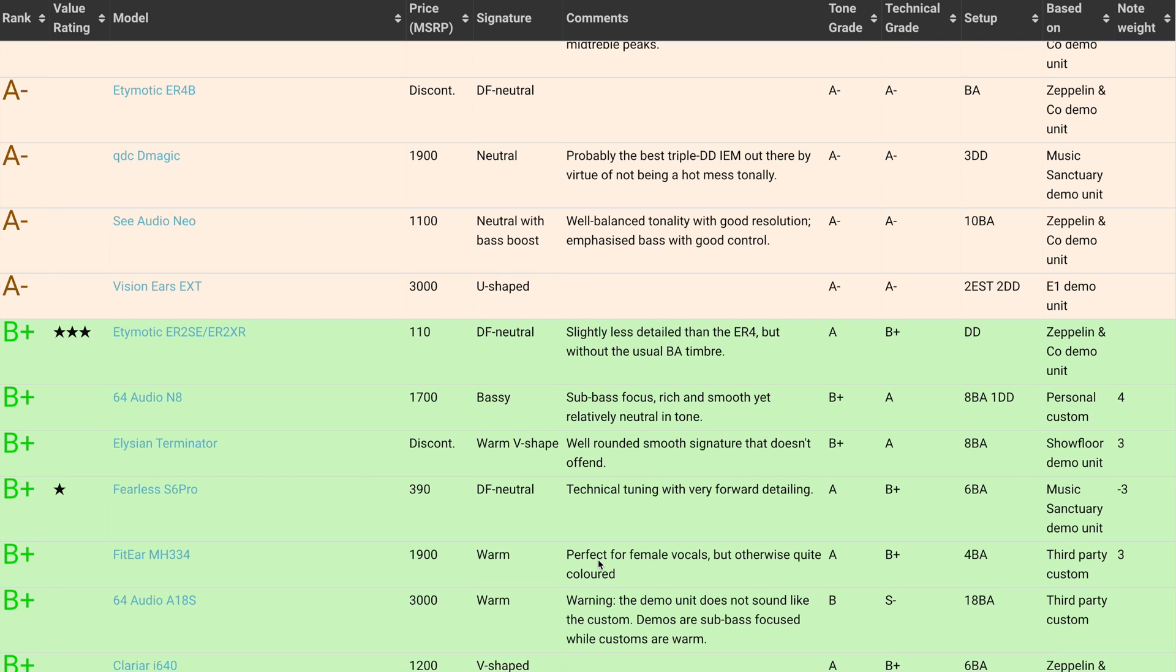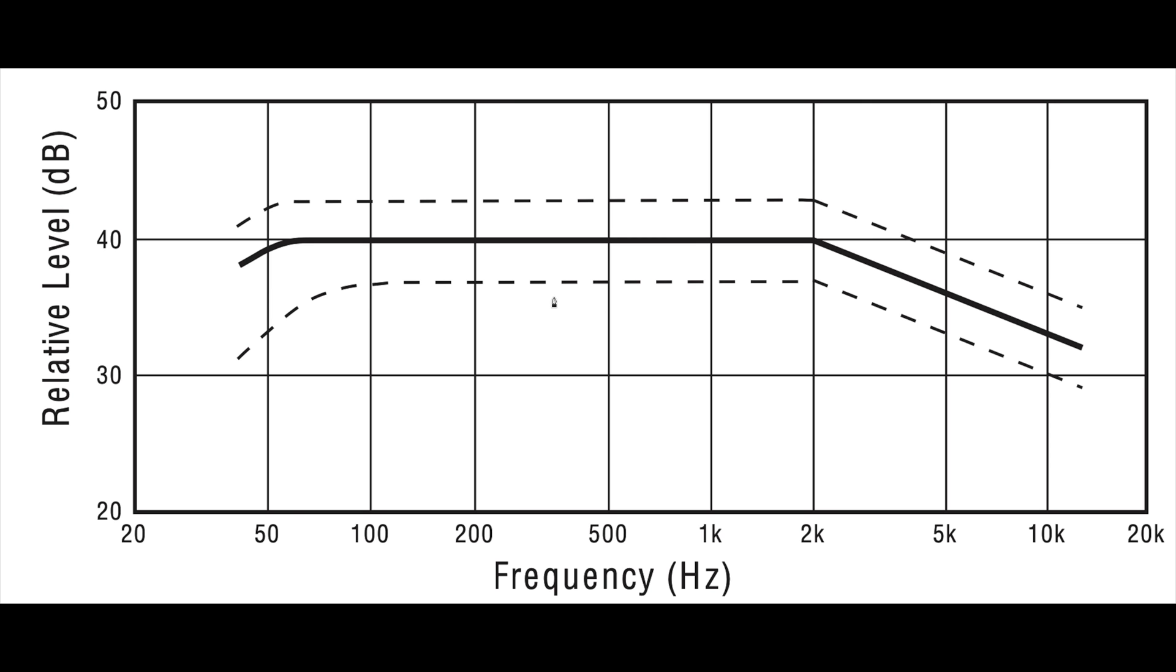My god, this guy knows no shame. I only have two possible explanations for this: a complete lack of comprehension or pure measurement manipulation. First of all, the etymotic ER2SC does not even target diffuse field, as I briefly explained